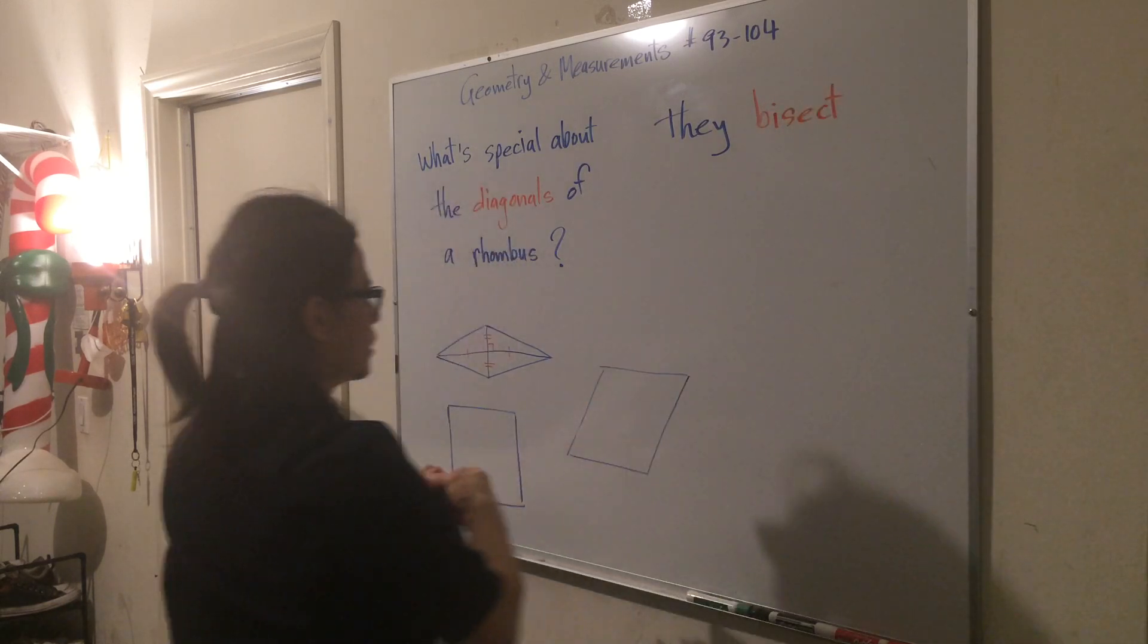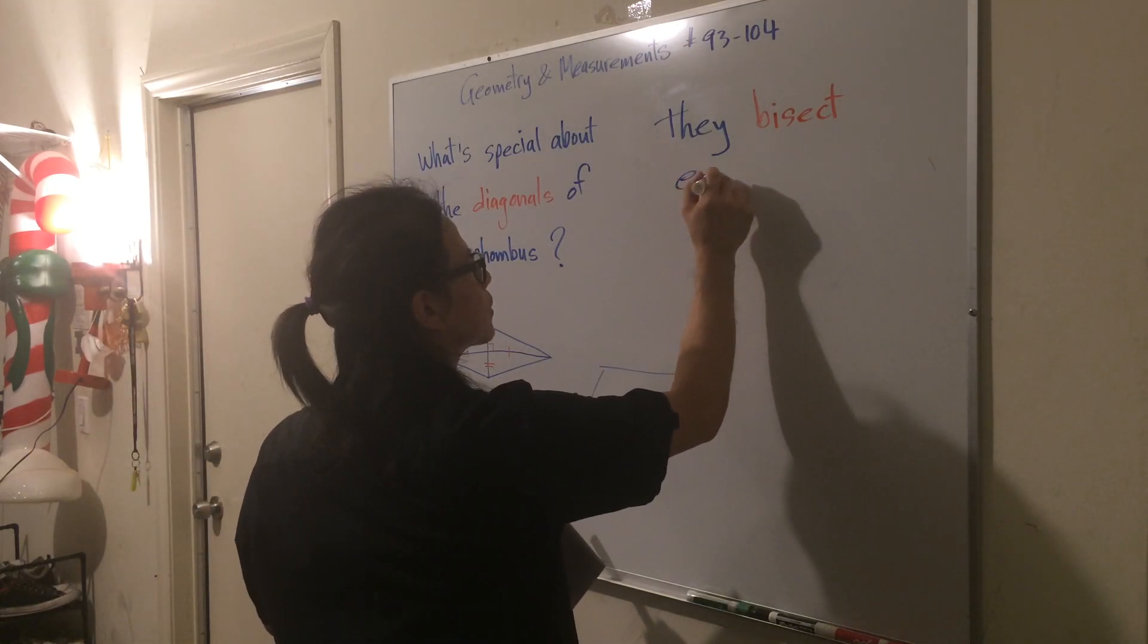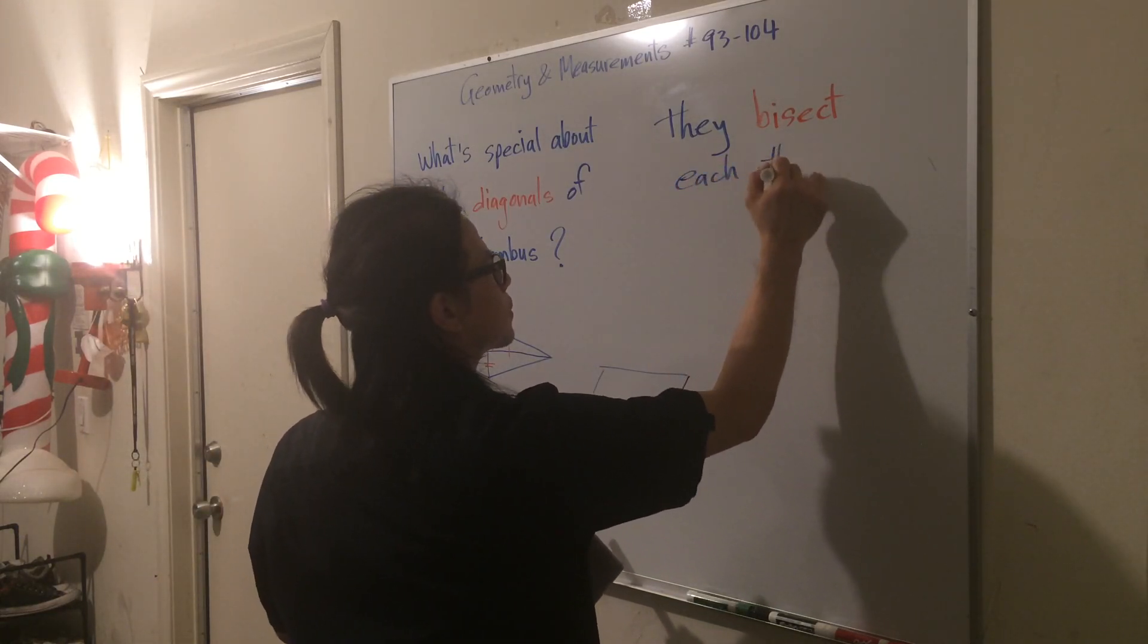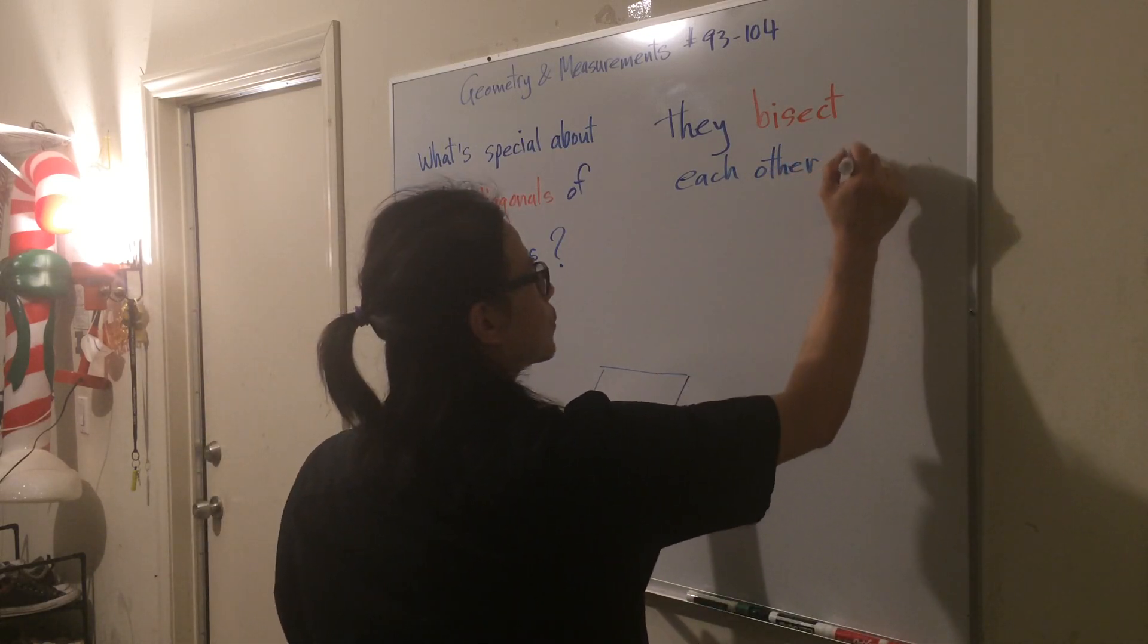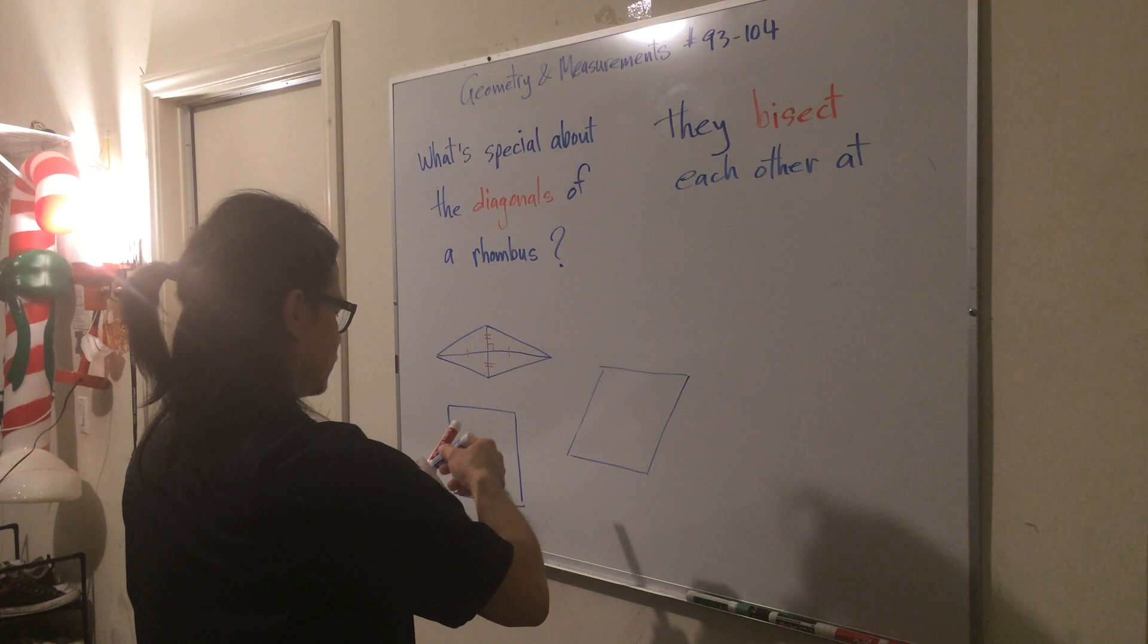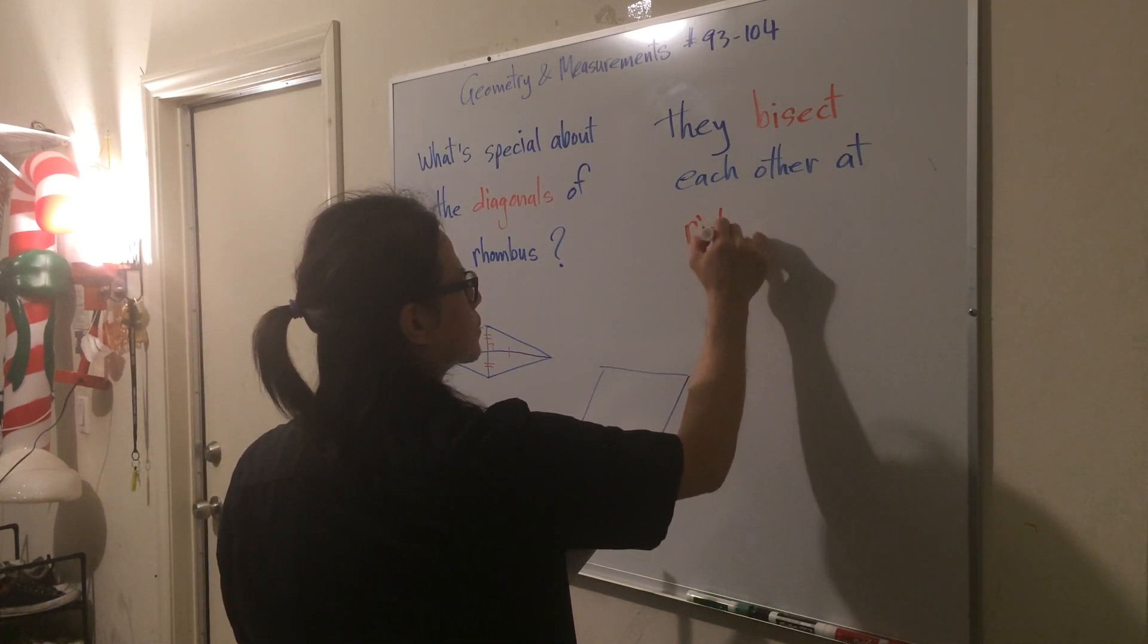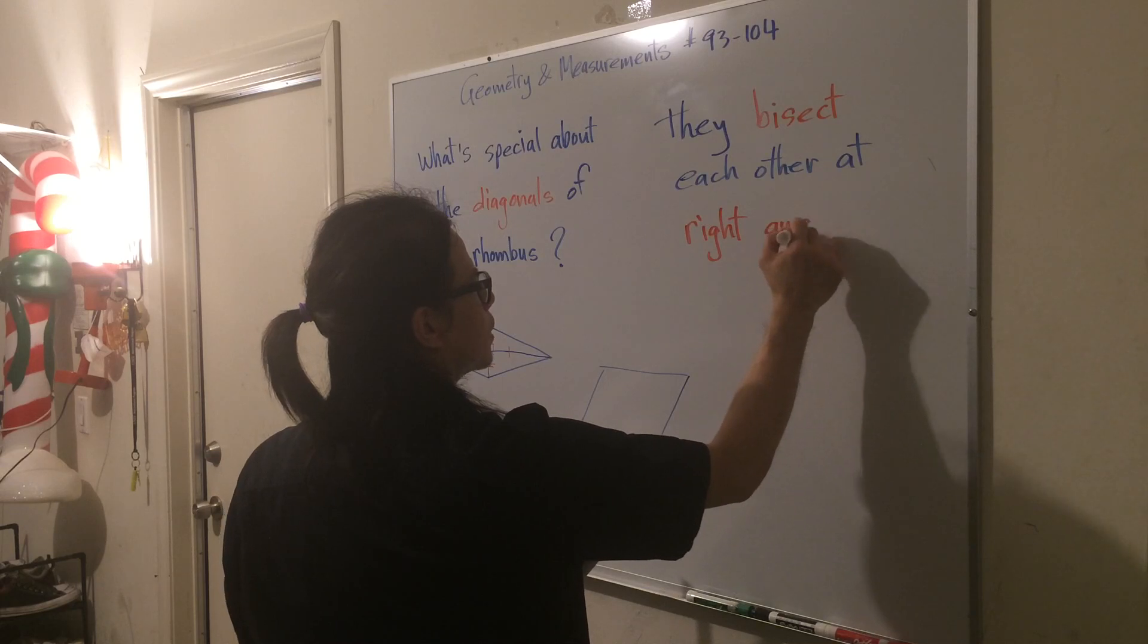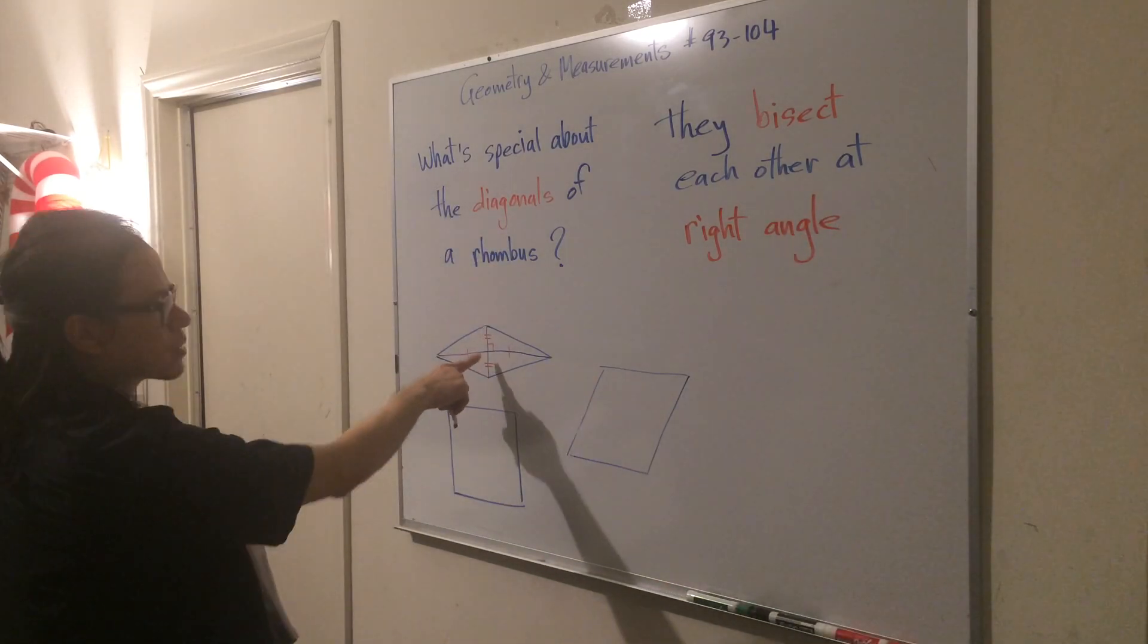Each other at right angles. Okay, so they form 90 degrees at the point where they cross.